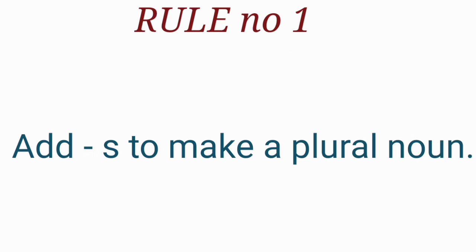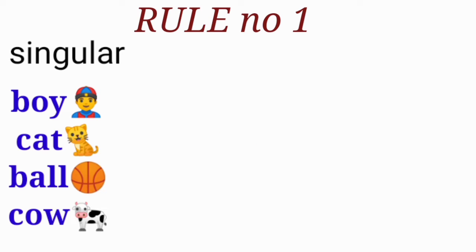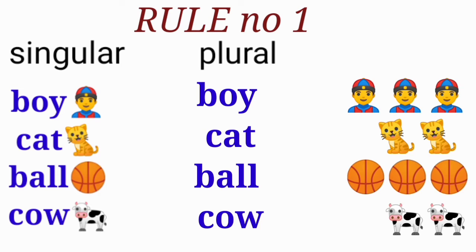Rule number one: add S to make a plural noun. In singular form, the examples are: boy, cat, ball, and cow. Now in plural form,